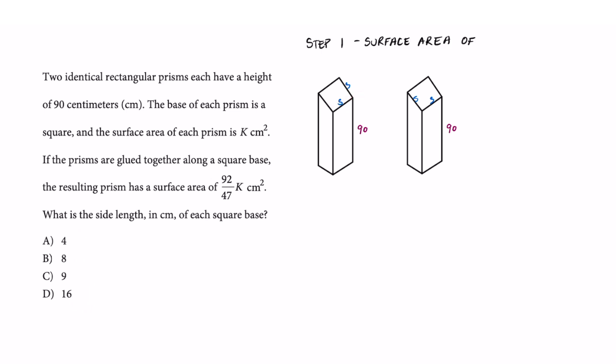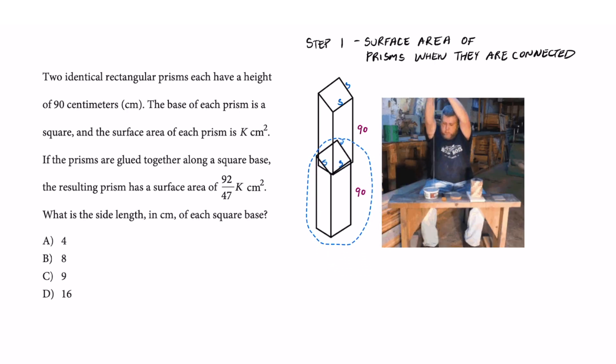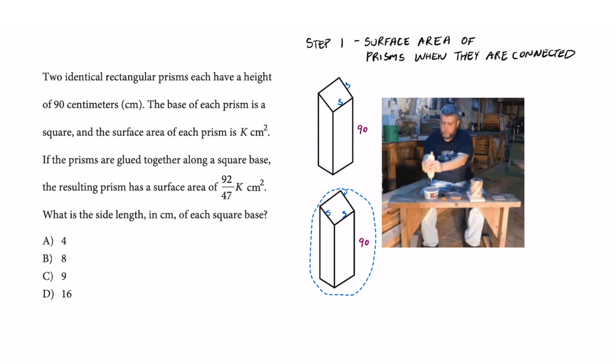Step one is going to find the surface area of both of these prisms when they are connected at the square base. So let's visualize what the heck is going on. We're going to take this and connect it to the square base right here. It's not a perfect picture, but this is what's going to happen.